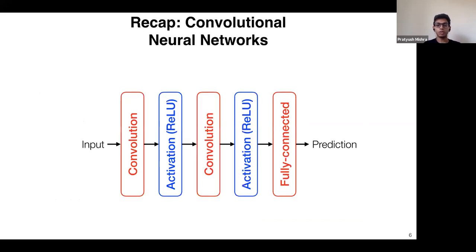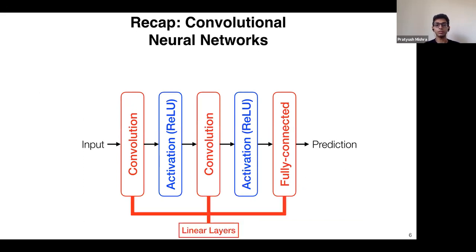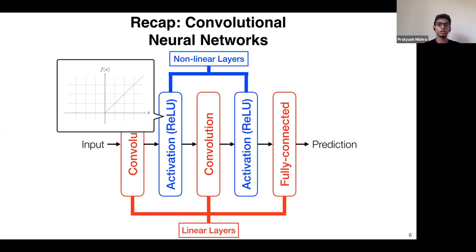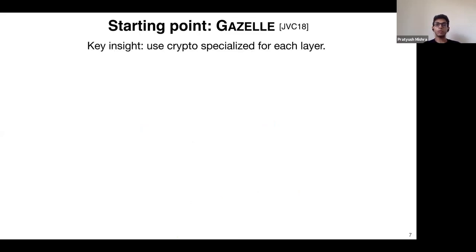A quick recap of convolutional neural networks: these consist of alternating linear and nonlinear layers. Linear layers include convolutions and fully connected layers. Nonlinear layers include activation functions such as ReLU, which is zero for inputs less than zero and identity for inputs greater than zero. To evaluate the network you go layer by layer until you get the output.